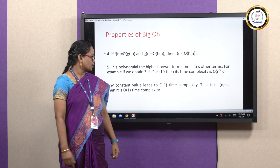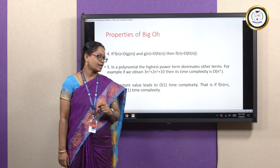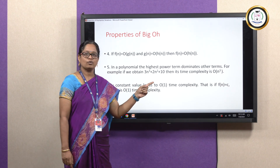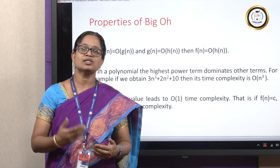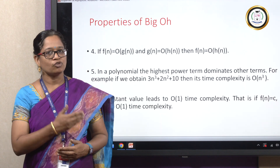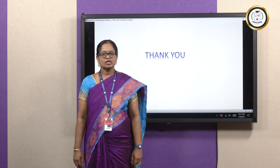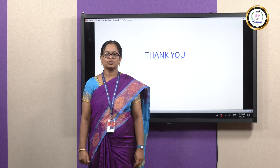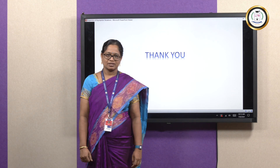The last property: any constant value leads to O(1) time complexity. That is, if f(n) = c, where c is a constant, then the time complexity is O(1). For example, if f(n) = 10, it is a constant number; therefore, the time complexity is O(1). Thank you, learners, for patiently listening to the video. We will meet you again in the next video lecture. Thank you all.